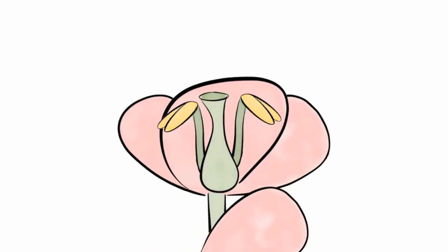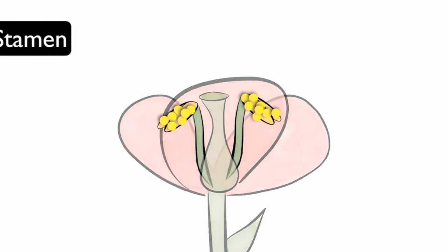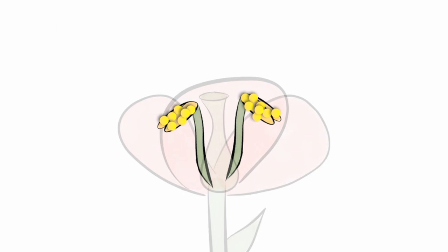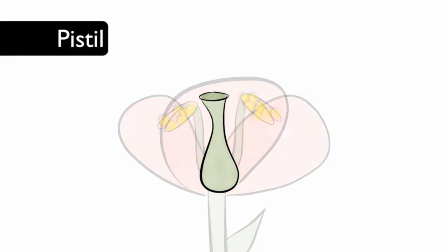Pollination is the movement of pollen into the pistil. Pollen is the male reproductive cell and can be found on the stamen of flowers. Pollen must be moved from the stamen to the female part, called the pistil.